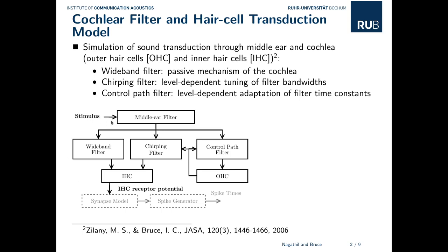The model emulates the auditory periphery by a static middle ear filter and a nonlinear and time-varying cochlear filter bank. The resulting inner hair cell receptor potential can be further processed by a stochastic synapse model and a spike generator, which simulate action potentials in auditory nerve fibers. In this work we discard the synapse model and spike generator and only consider the inner hair cell receptor potential for normal hearing listeners.